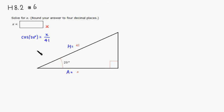By multiplying both sides by 41, we get x is equal to 41 times cosine of 20 degrees.